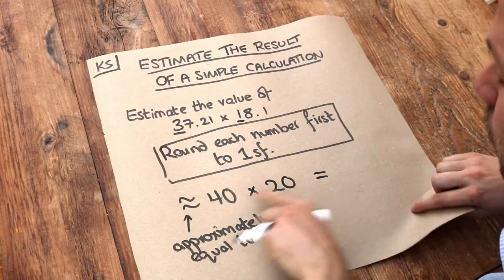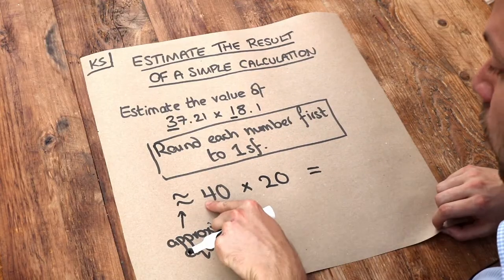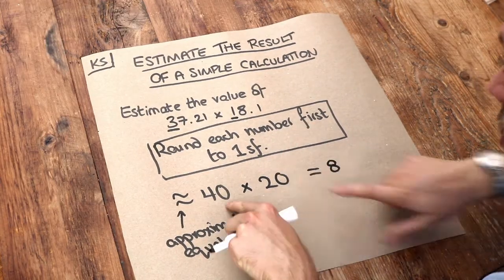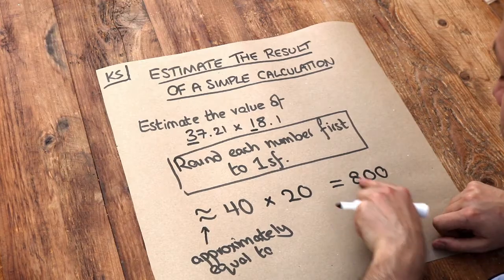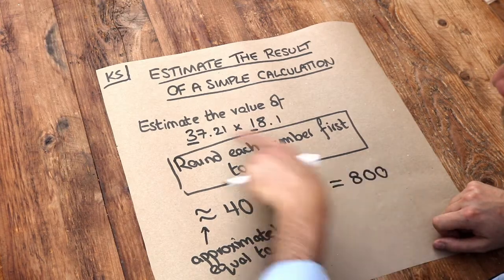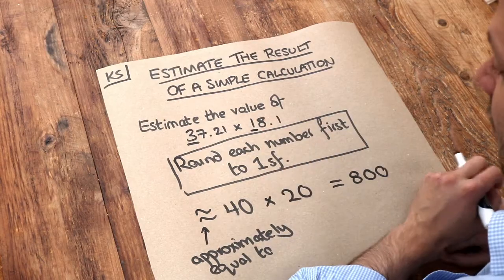And now we can just do 40 times 20. Well, four times two is eight. And we've got two zeros on the end, so we have 800. And that's a fairly good estimate, a fairly good guess of what the exact result of this calculation is.